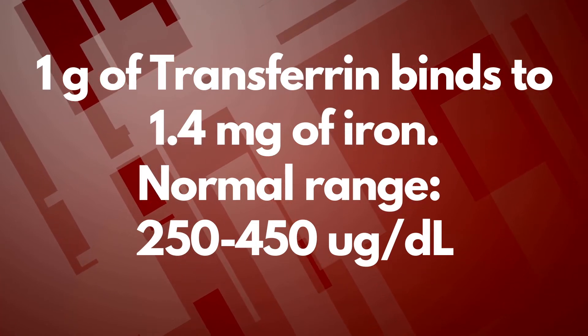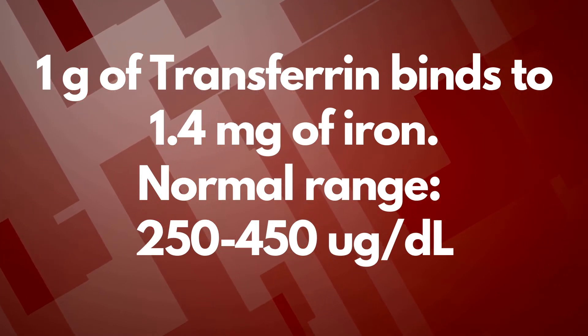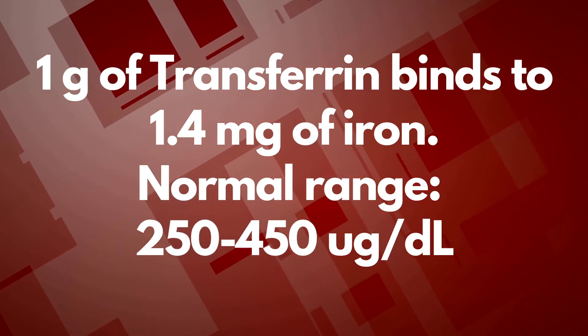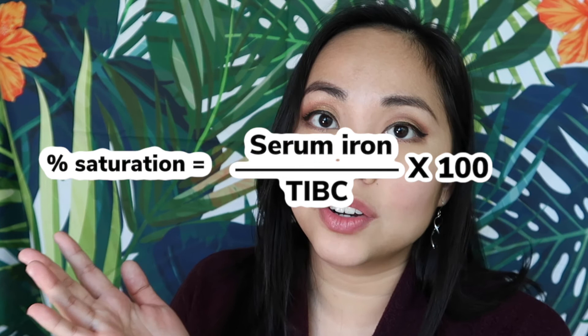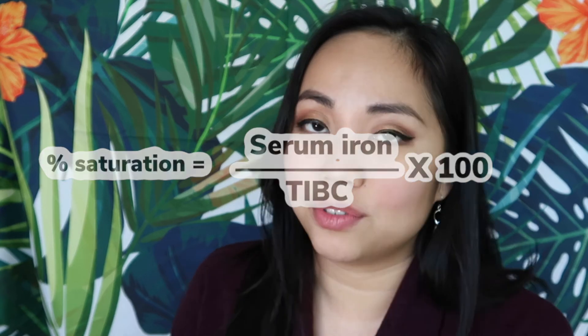A quick note: transferrin actually binds 1.4 milligrams of iron per one gram of it. The normal range for TIBC is 250 to 450 micrograms per deciliter. Next is transferrin saturation, which tells you the amount of iron bound in plasma to transferrin. The formula is: serum iron divided by the amount of transferrin, times 100%. If there's less than 16% iron saturation, this is a sign of iron deficiency.